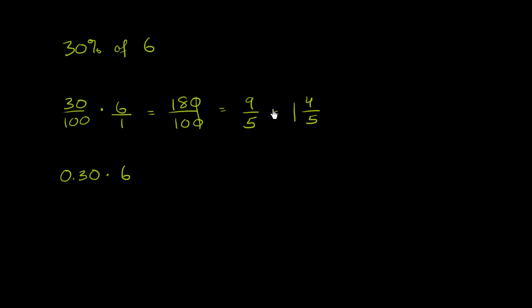If we wanted to write this as a decimal, 4 fifths is 0.8. To verify that, 5 goes into 4 zero times. It goes into 40 eight times. 8 times 5 is 40. Subtract, you have no remainder, and you just have zeros left here. So 4 fifths is 0.8.